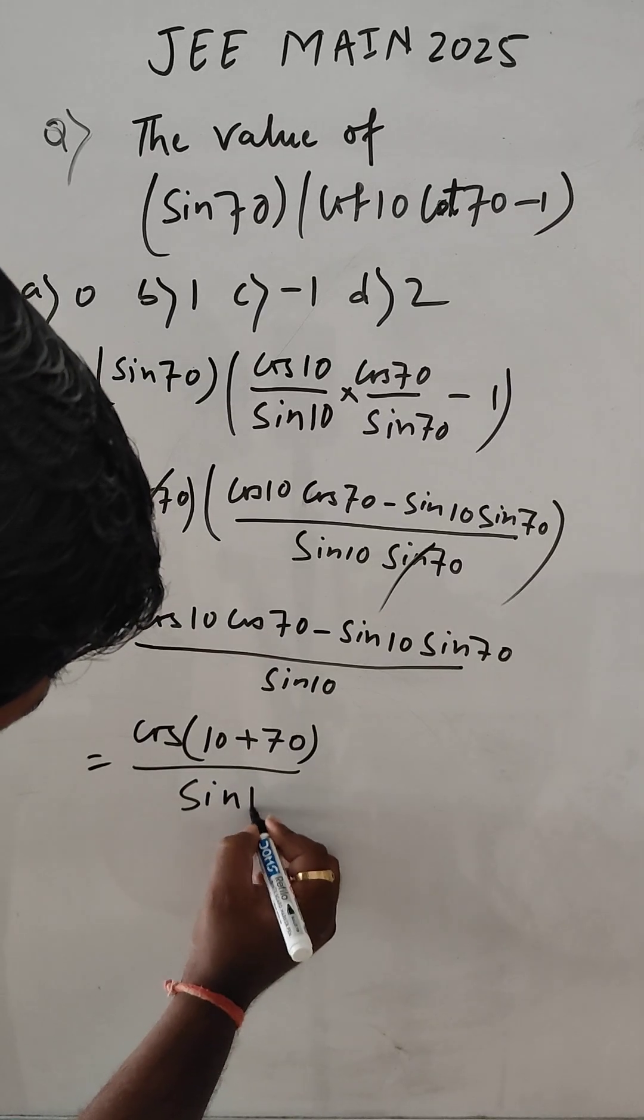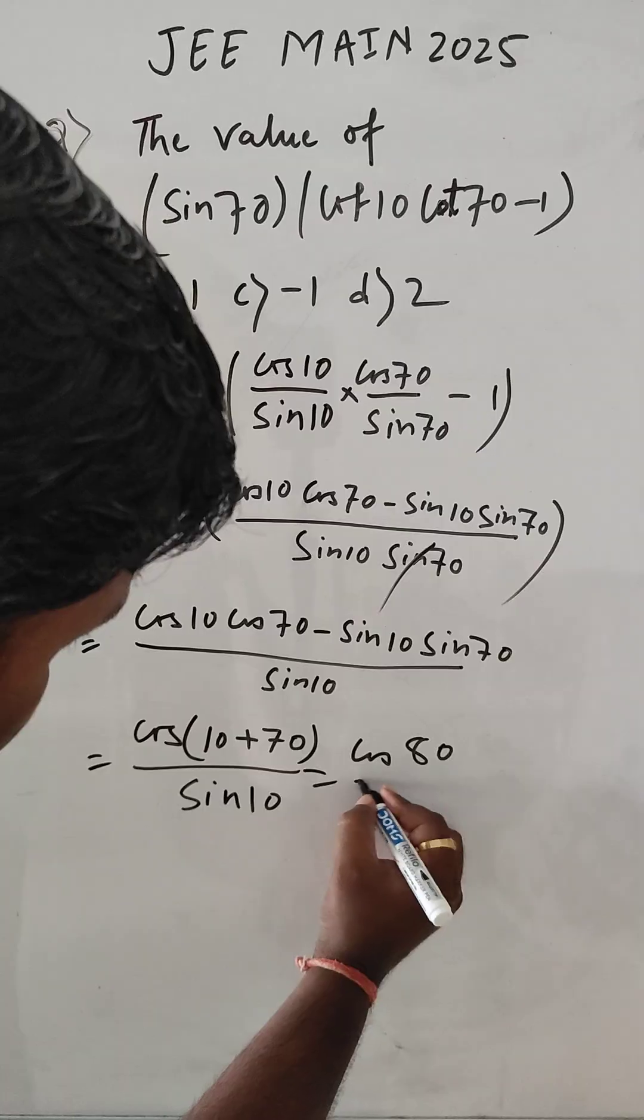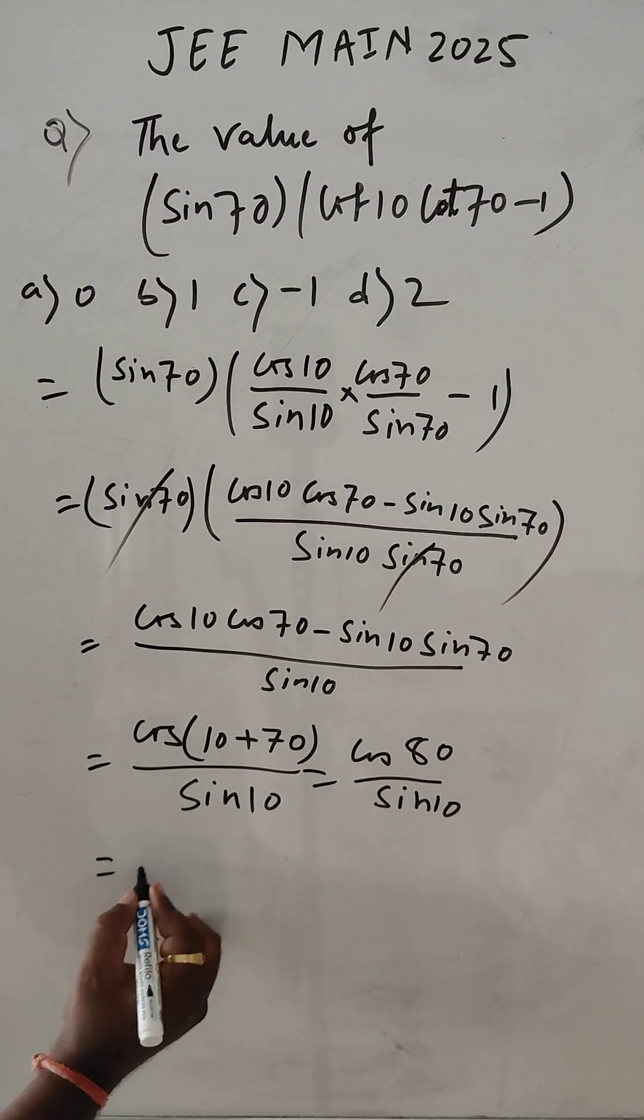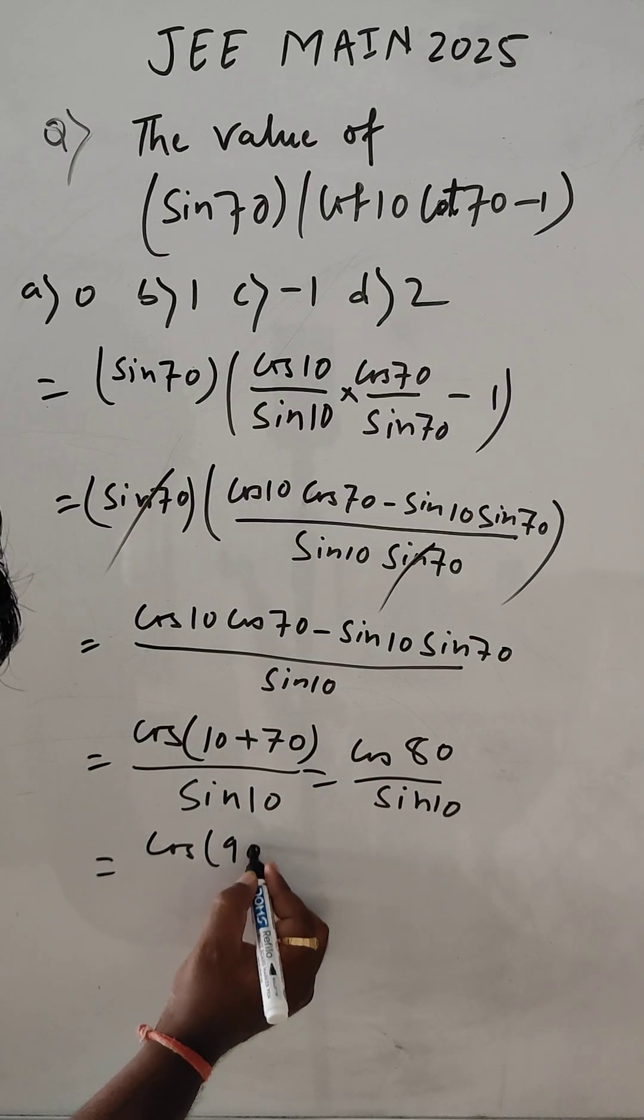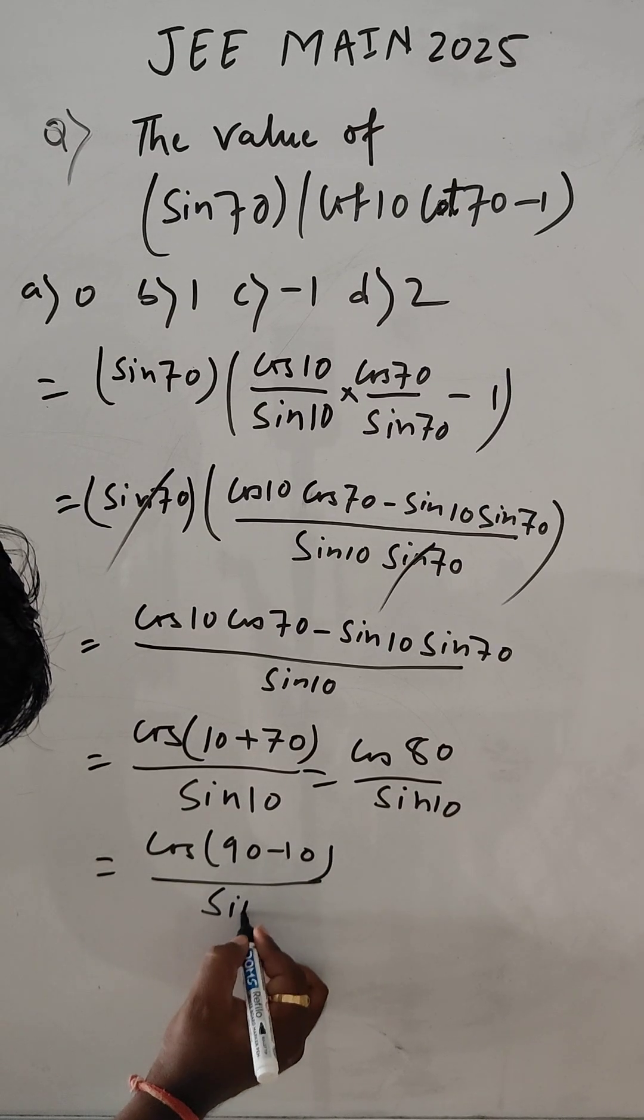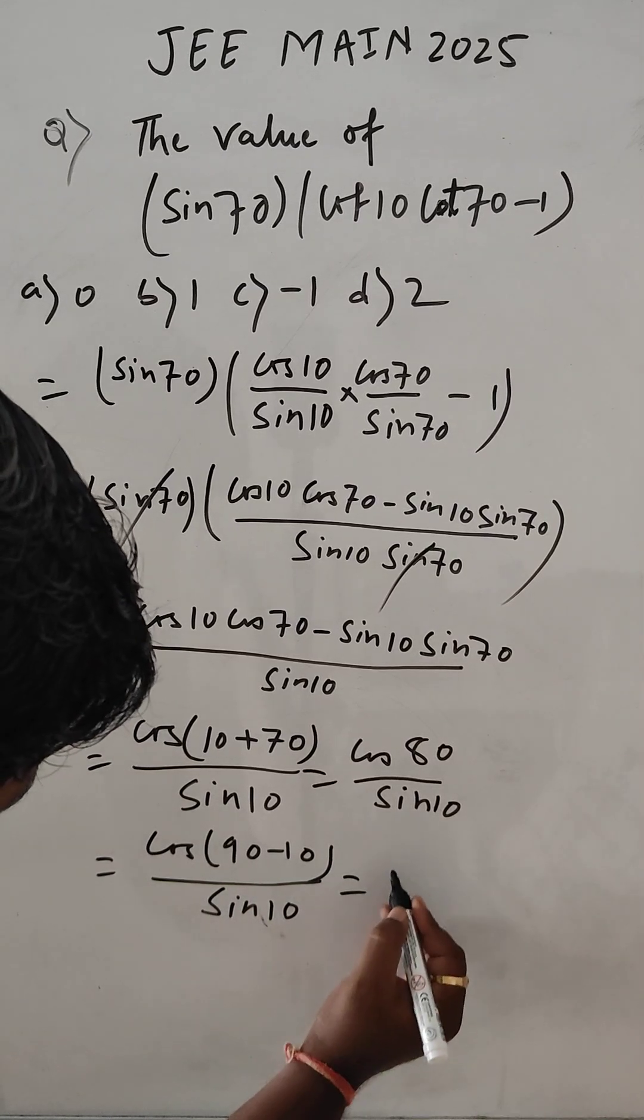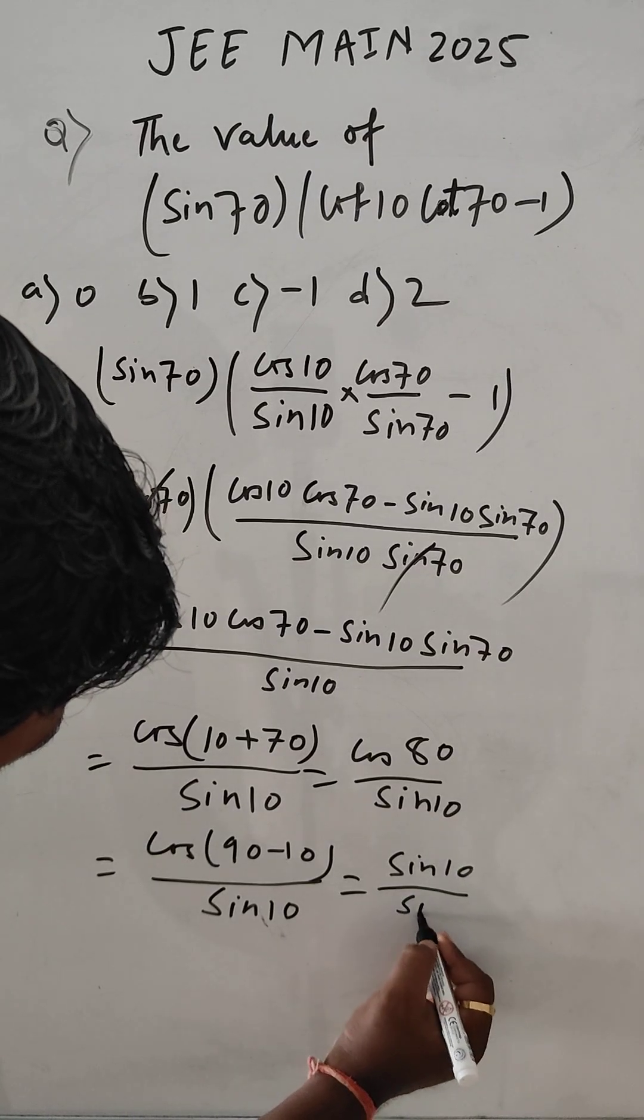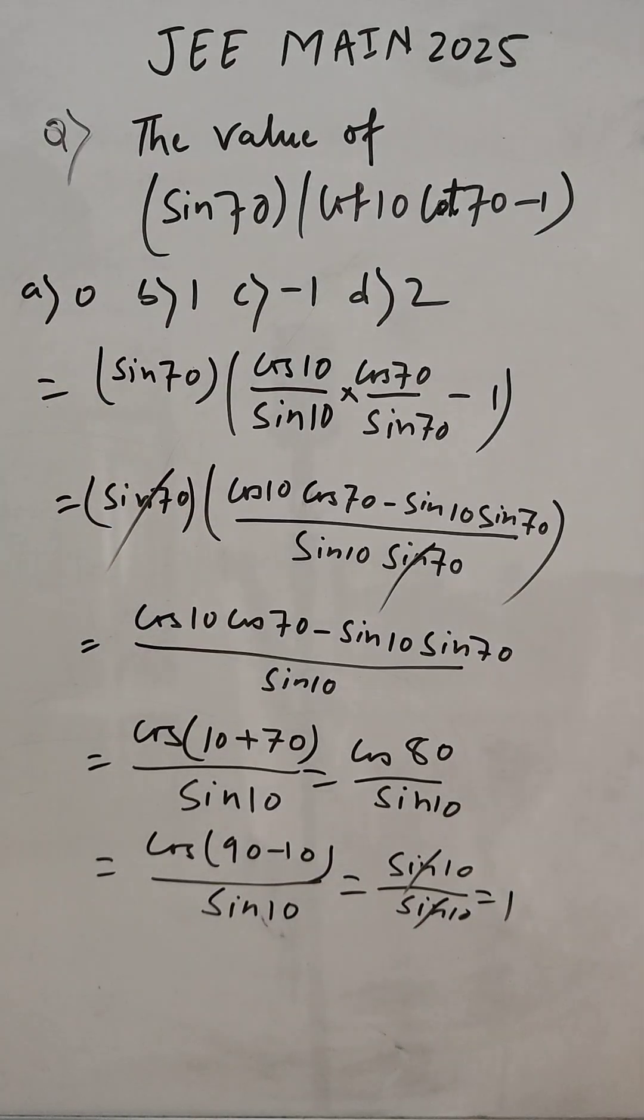So sin 10. This is cos 80 by sin 10. So here we can write cos 90 minus 10 divided by sin 10. So this is sin 10, and the answer value is 1.